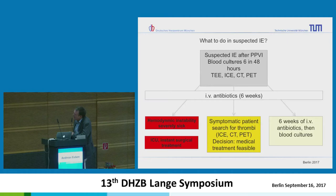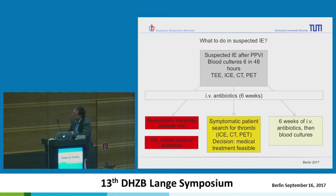If we treat medically, we use antibiotics for six weeks. If we can't visualise the valve, we do ICE, sometimes a PET scan, and CT to look for pulmonary embolisations. After six weeks of antibiotics, we take blood cultures again and decide if we think the patient is cured.